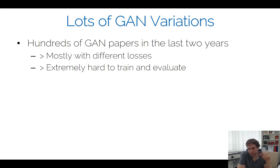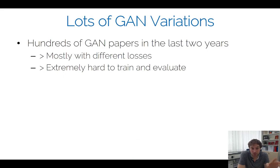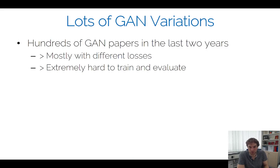A lot of engineering effort goes into GAN results beyond the published architecture. For example, the progressive GAN authors created a specially curated dataset with aligned facial landmarks (nose and eye regions) to make training work well. When reading GAN papers it's worth being cautious about attributing breakthroughs solely to the architectural innovation, since data engineering and hyperparameter tuning also play major roles.